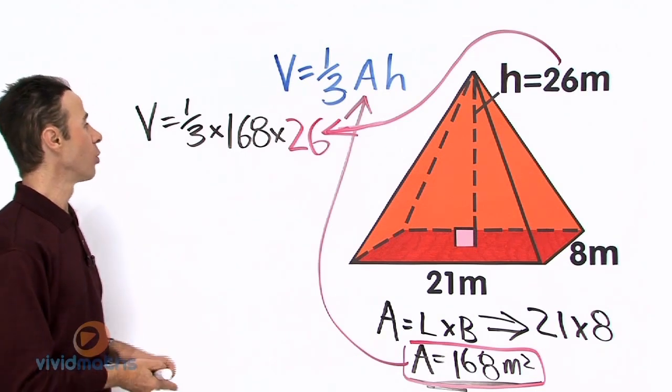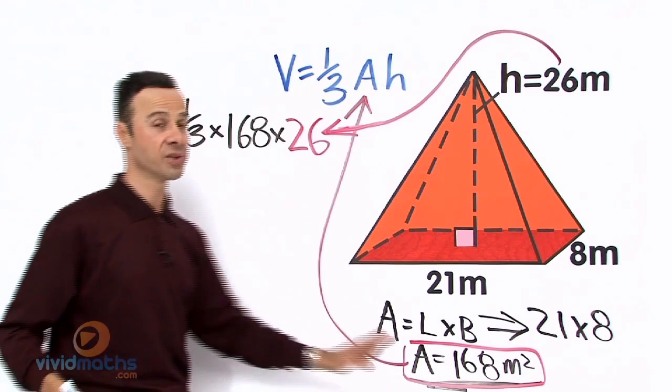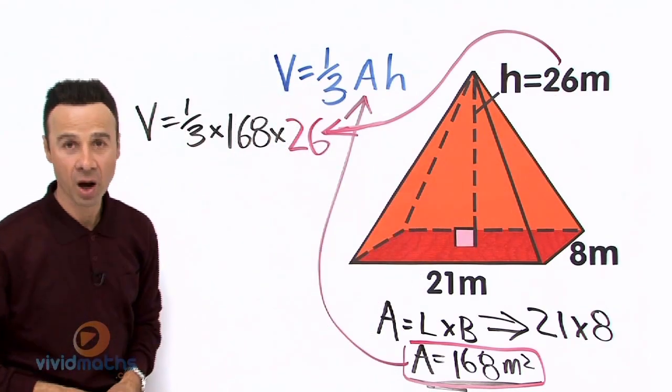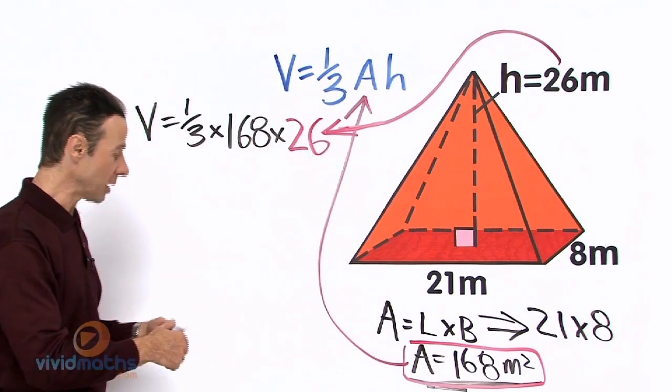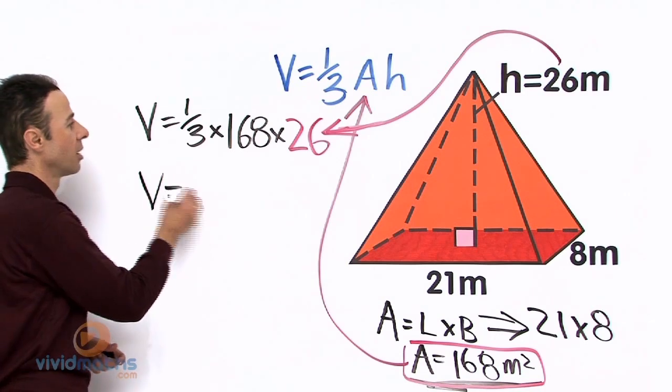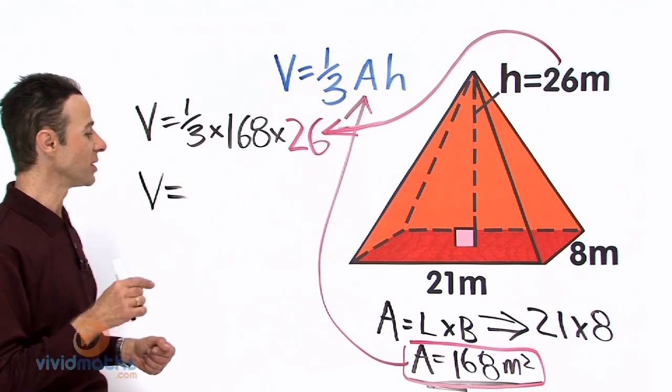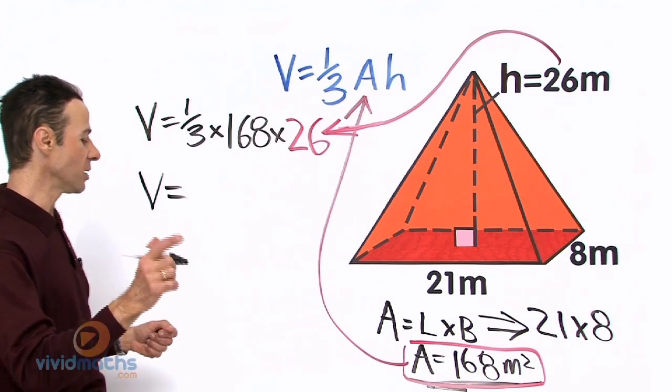Okay, there are all our values: one-third, 168 is the area of the base, and 26 that's the vertical perpendicular height. Let's plunk that all into the formula, into the calculator. One-third times 168 times 26, grand total is...